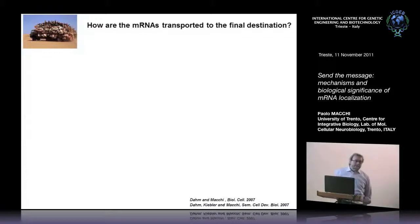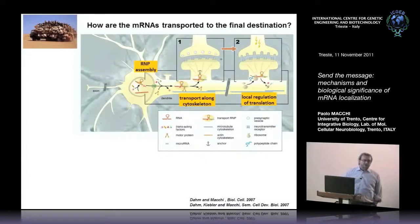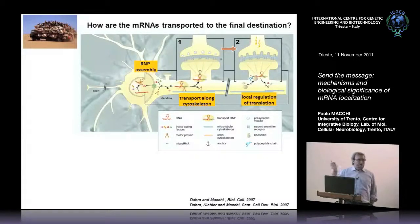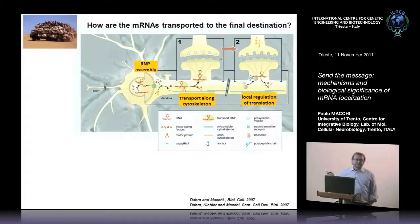How are mRNAs transported? It's a multi-step process starting in the nucleus: the mRNA is transcribed, spliced, capped, and polyadenylated. It is bound by proteins forming ribonucleoparticles (RNPs). These RNPs leave the nucleus, are bound by motor proteins, and become competent for transport. They are transported along microtubules into dendrites or axons, anchored in proximity to synapses, and when a stimulus arrives the mRNA is translated into protein.